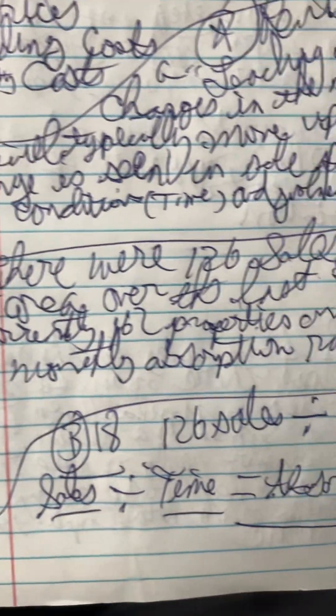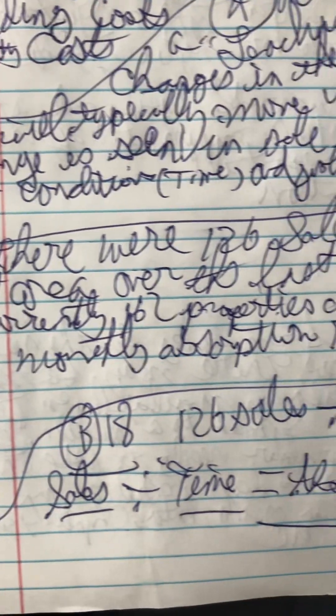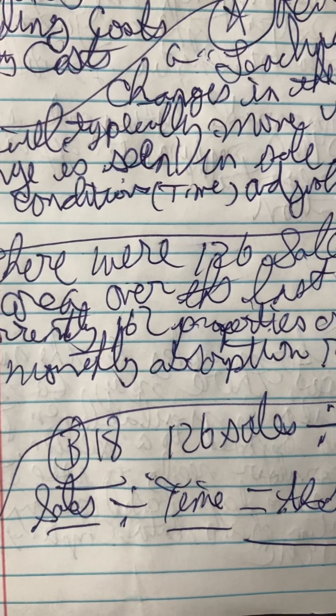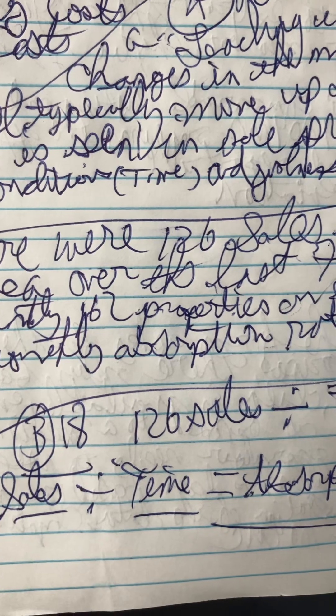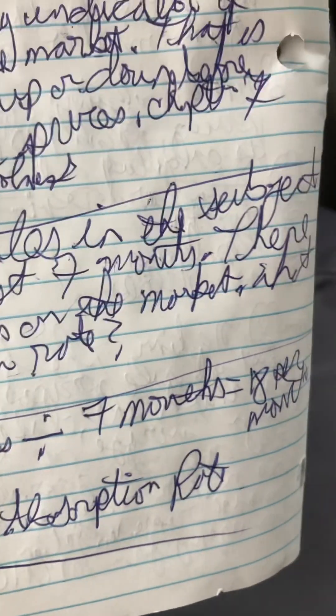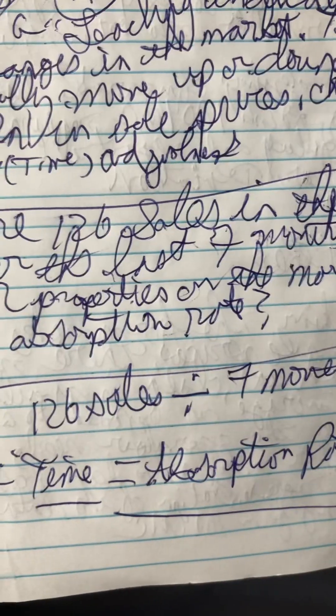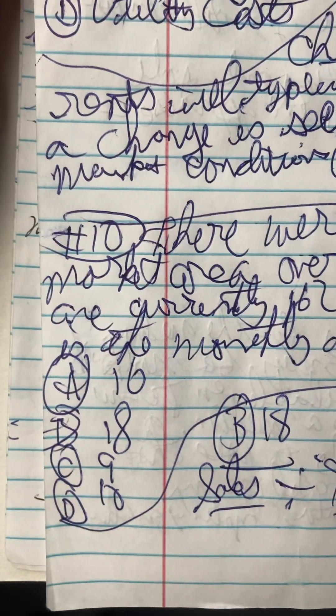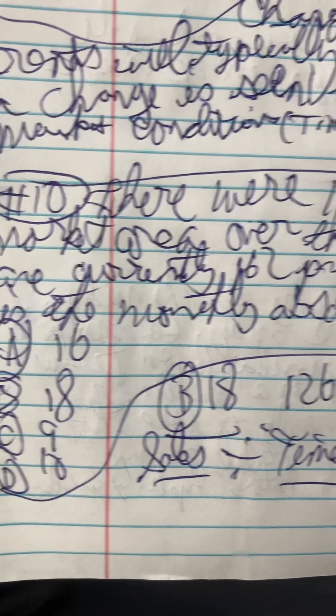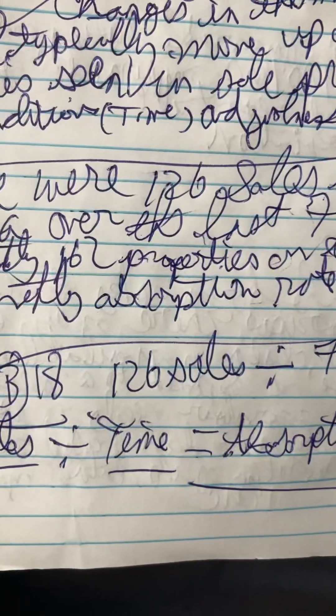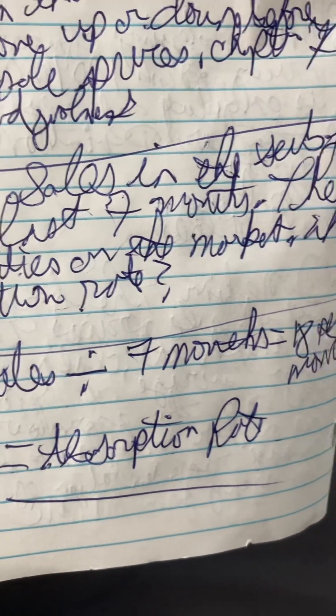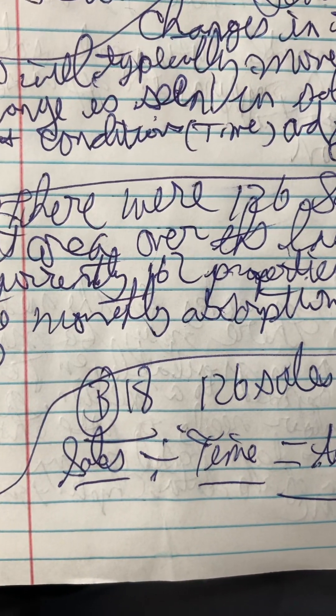Number 10: there were 126 sales in the subject's market area over the last seven months. There are currently 62 properties on the market. What is the monthly absorption rate? A. 16, B. 18, C. 9, or D. 10? The answer is B — 18. You take 126 sales divided by 7 months, which equals 18 per month. Sales divided by time equals the absorption rate.